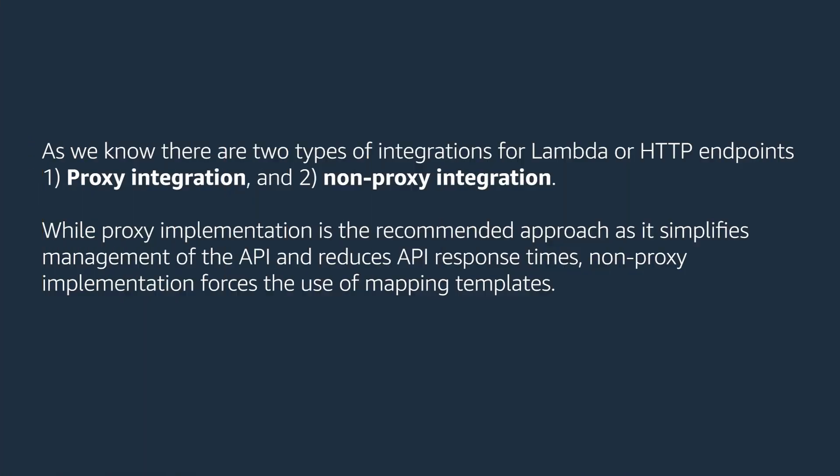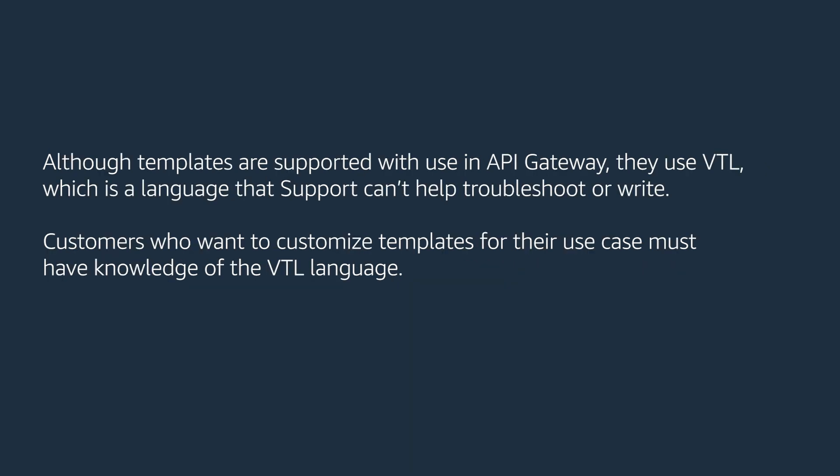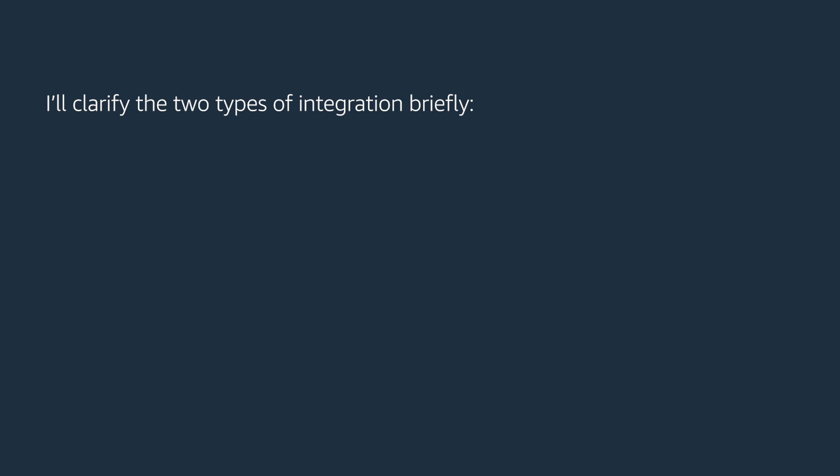Let's get started. As we know, there are two types of integrations for Lambda and HTTP endpoints. The first kind is proxy integration and the second kind is non-proxy integration. While proxy implementation is the recommended approach as it simplifies management of the API and reduces API response times, non-proxy implementation forces the use of mapping templates. Although templates are supported in API Gateway, they use VTL, which is a language that support can't help troubleshoot or write. Customers who want to customize templates must have knowledge of the VTL language.